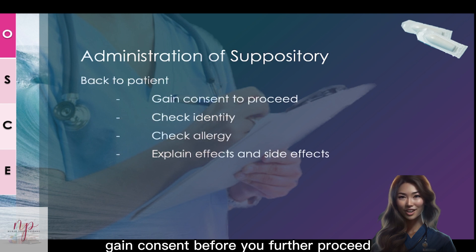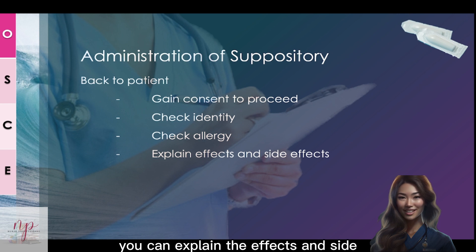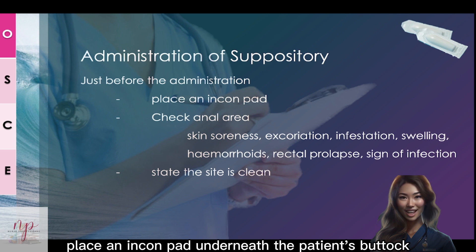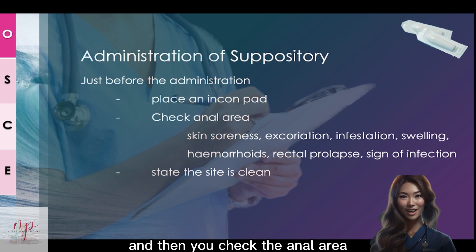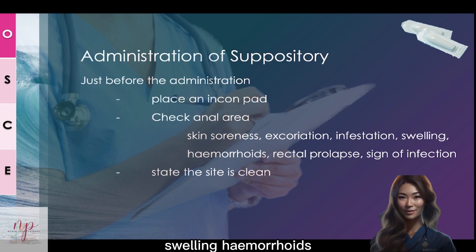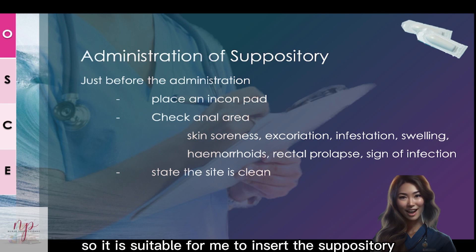When you're back with your patient, gain consent before you further proceed. Check the identity again because you are giving medication, and check the allergy. At the same time, explain the effects and side effects of the medication. Just before you administer the suppository, place an incontinence pad underneath the patient's buttock and then check the anal area. State the key words: 'I do not see any skin soreness, excoriation, infestation, swelling, hemorrhoids, rectal prolapse, or signs of infection. The site is clean and suitable for me to insert the suppository.'